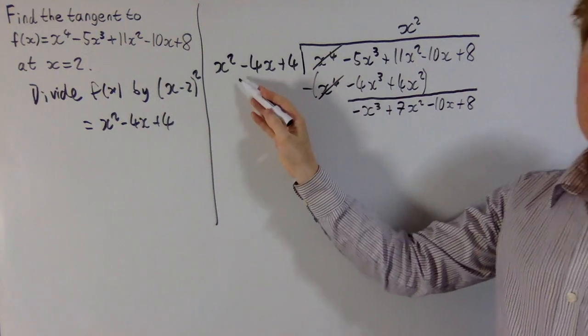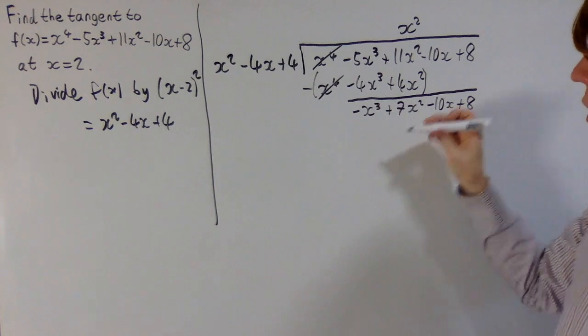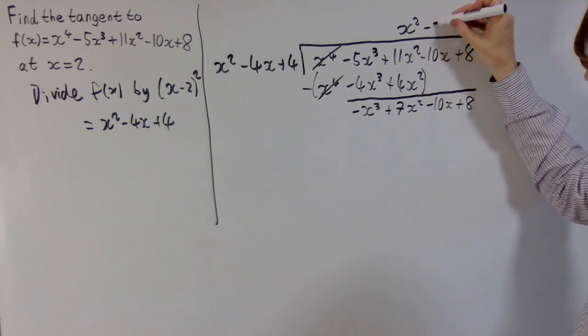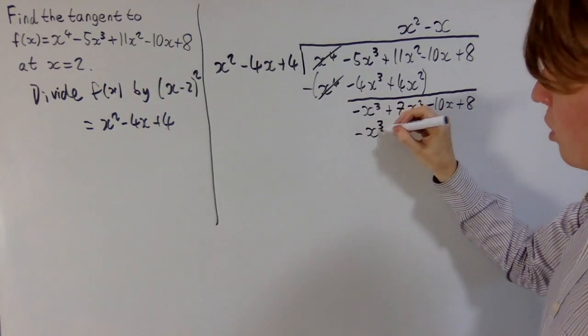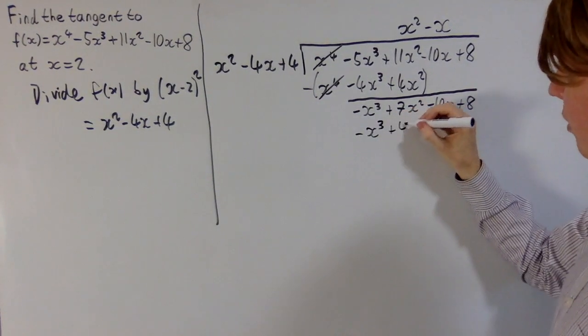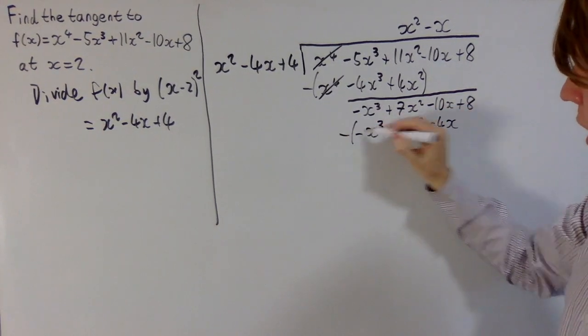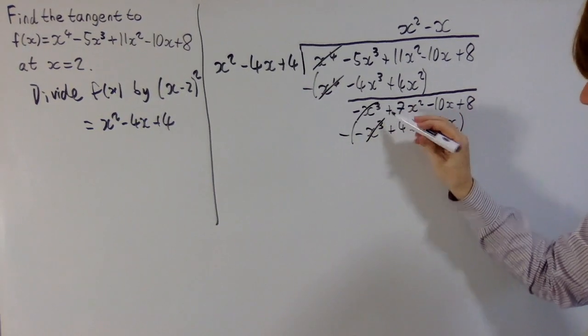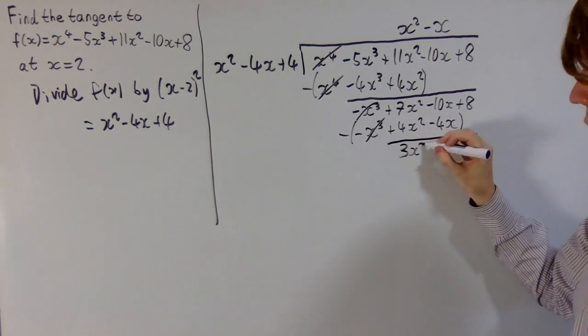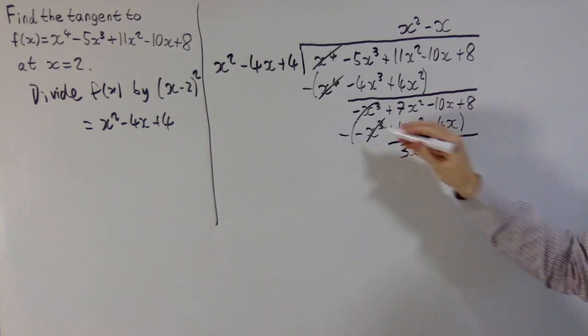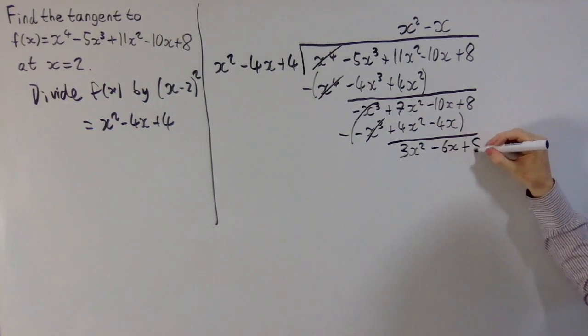So now what we need to do is we need to multiply by some number times x, so that this will match up with our negative x cubed here, so you just need to multiply by negative x now. So you multiply all of these terms by negative x, you get negative x cubed plus 4x squared, and finally minus 4x. Then subtracting all of this, once again your x cubed terms cancel, and you're left with 7x squared minus 4x squared gives you 3x squared. Minus 10x minus minus 4x gives you minus 6x, and then your plus 8 is unchanged.